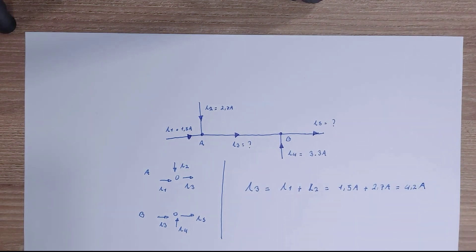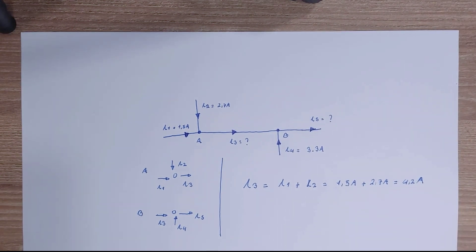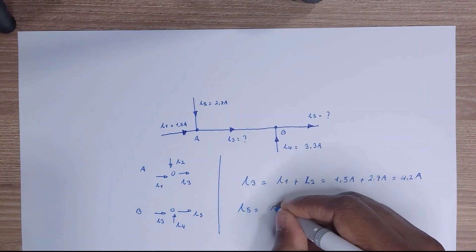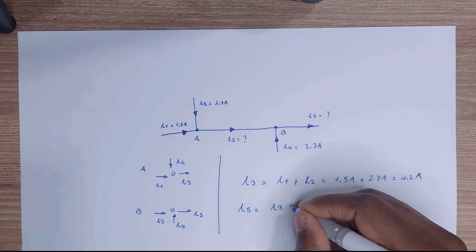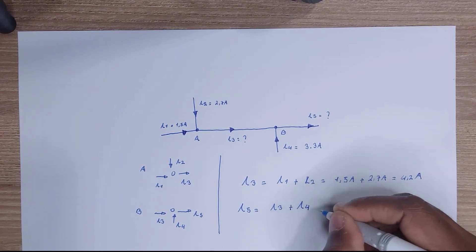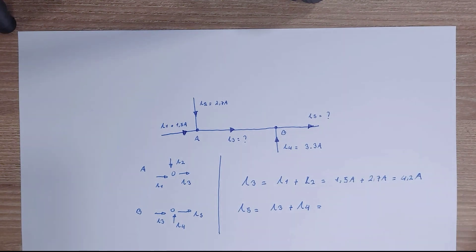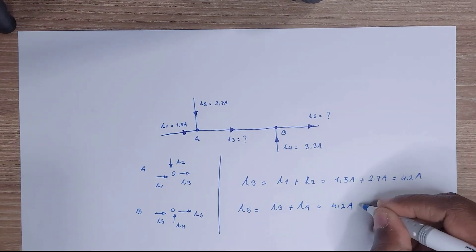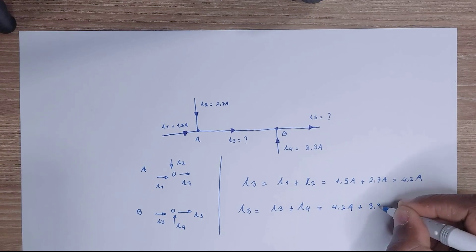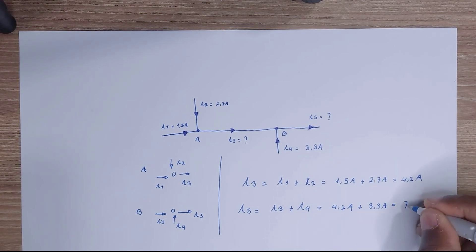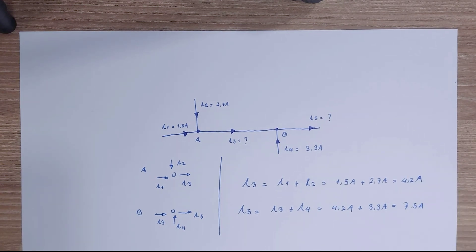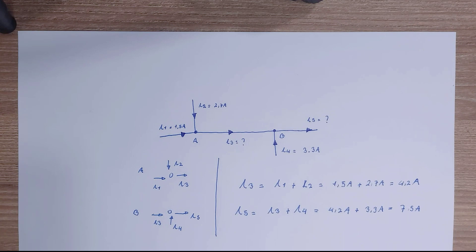Now that we have current 3, it's easier to calculate current 5. Current 5 is going to be current 3 plus current 4 — these are the currents going inwards the node. Current 5 is going to be equal to 4.2 amps plus 3.3 amps, equal to 7.5 amps. We have this circuit solved, we know all the currents, and this is basically how Kirchhoff's current law works.